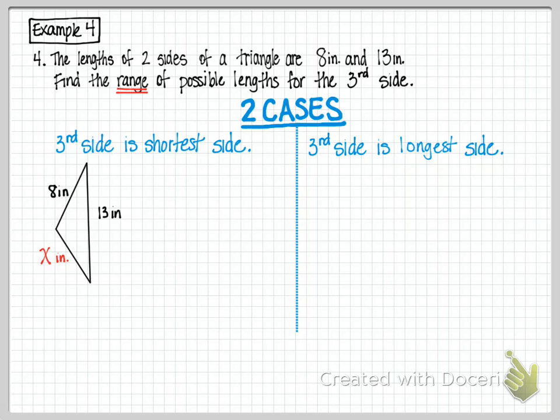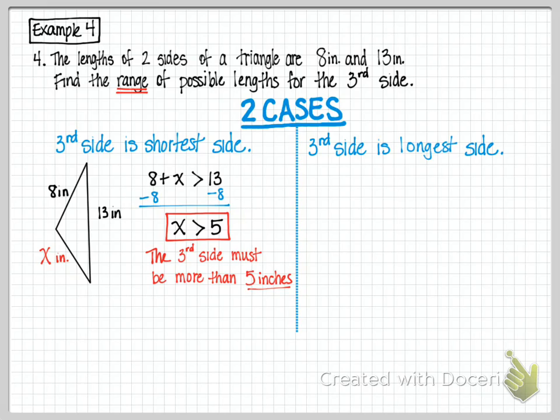Which would mean with triangle inequality theorem, that 8 plus x must be greater than 13. We can solve for x by subtracting 8, and get that x is greater than 5. Which means, in this case, the third side must be more than 5 inches. So when the third side is the shortest side, it's got to be more than 5 inches.